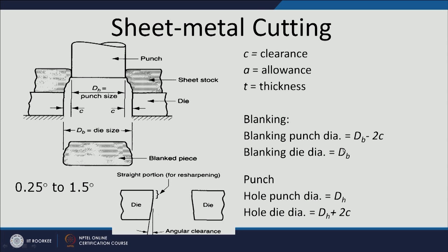The blanking die diameter is d_b, and the punch diameter for blanking is made smaller by 2C. For punching (making a hole), the punch diameter corresponds to the desired hole diameter, and the die diameter = punch diameter + 2C. So for punching, clearance is given to the die over and above; for blanking, the punch is made smaller by 2C relative to the blanking die diameter.